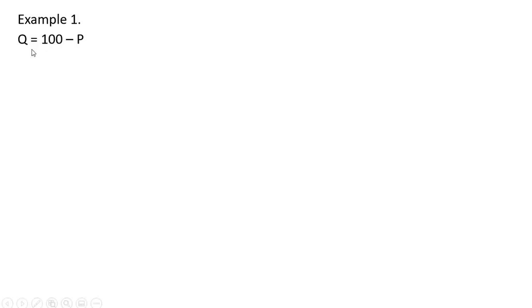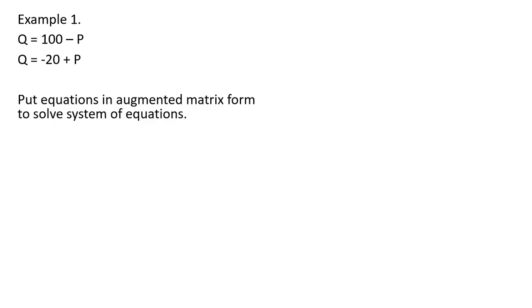Example 1: we have a demand equation and supply equation. We want to find the equilibrium price and quantity — the values for p and q. We're going to put the equations in augmented matrix form to solve the system. We'll get the constant on the right-hand side of each equation, keeping all the variables on the left-hand side. We do the same thing for the supply equation.